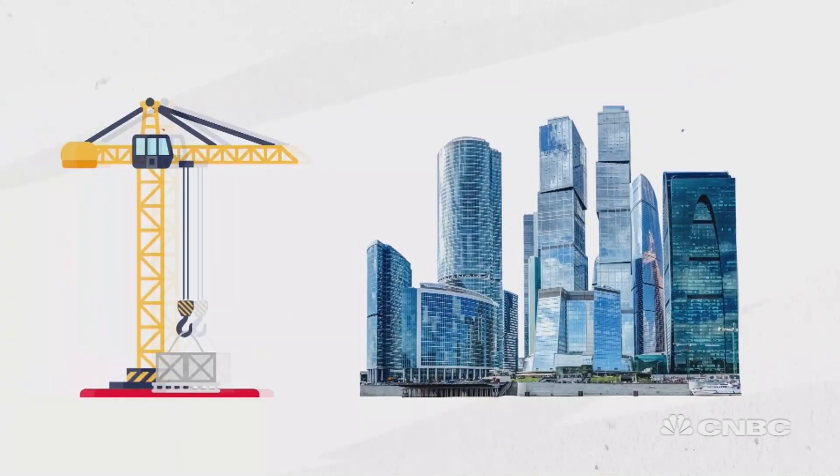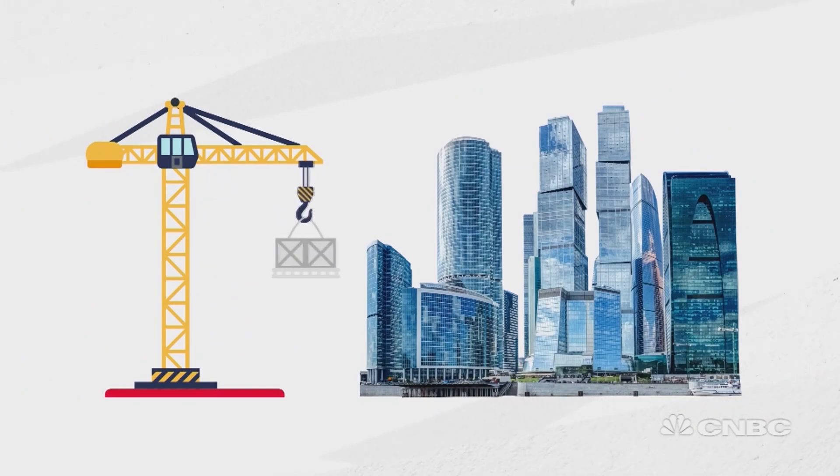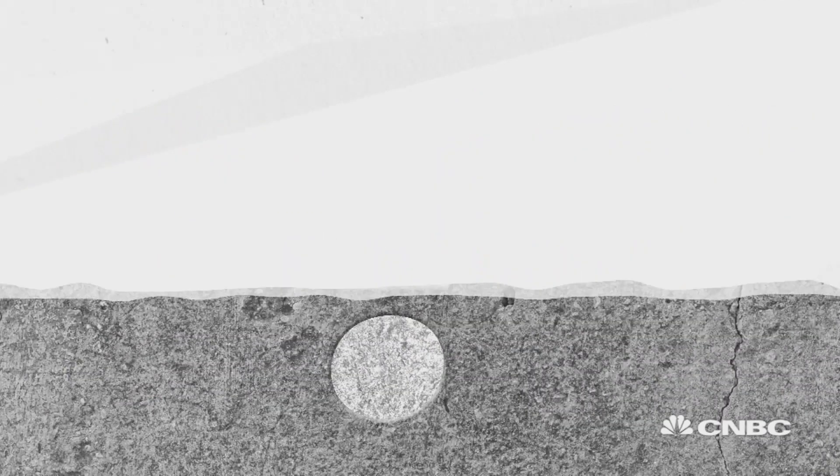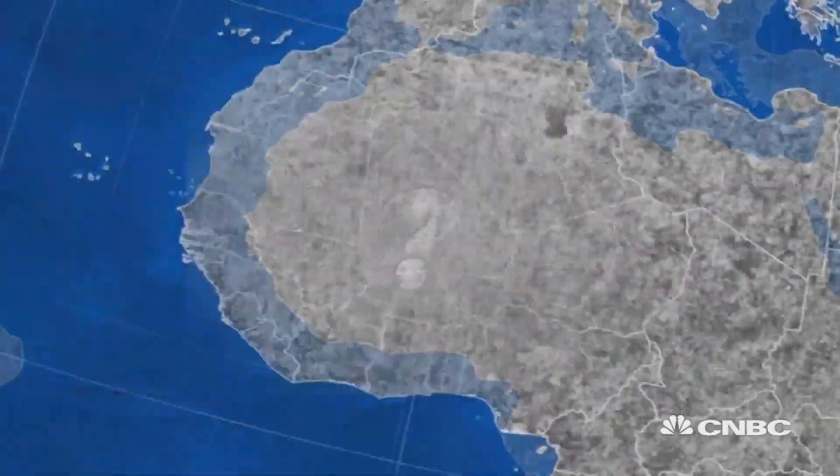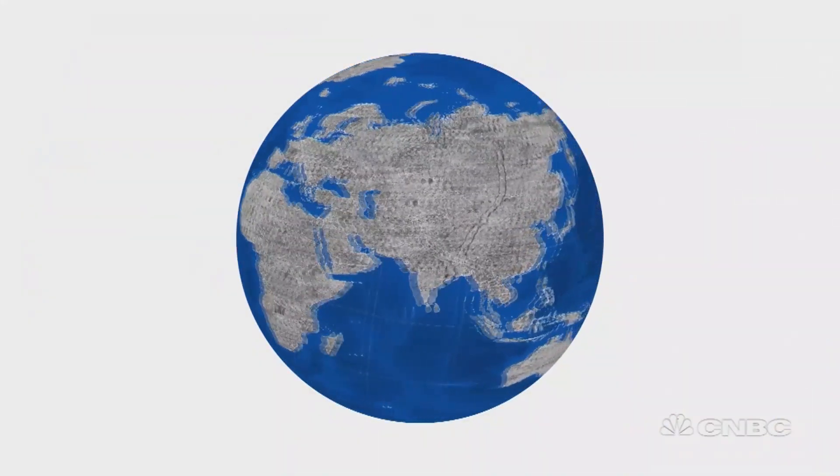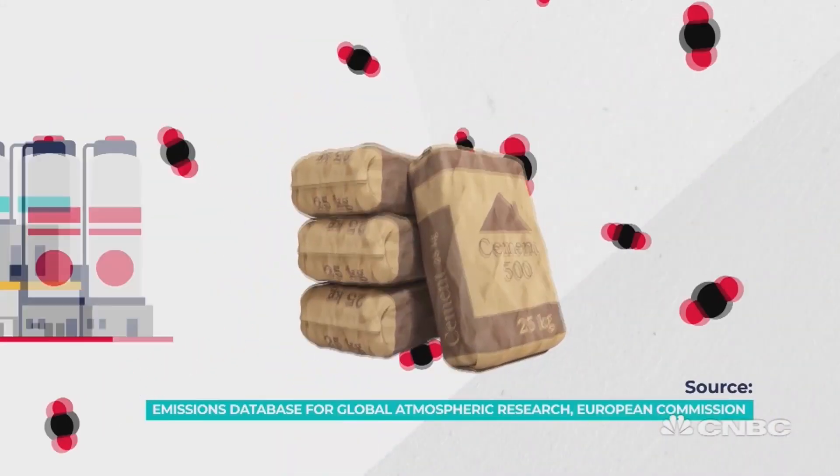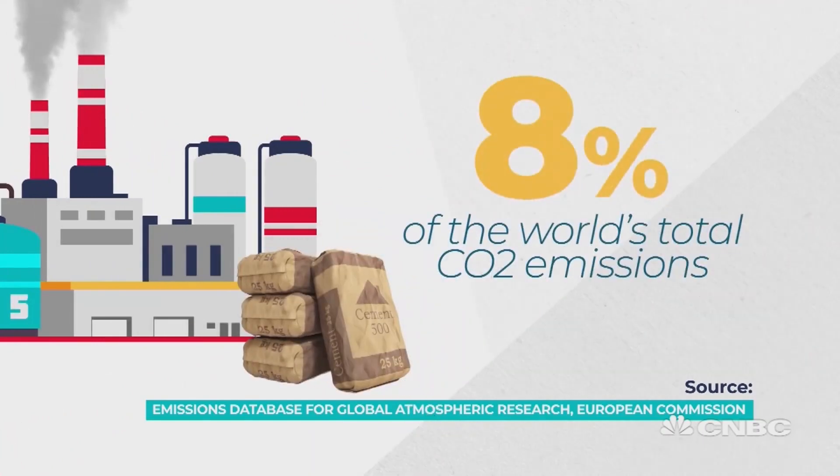And the process to build them in the first place is traditionally energy intensive. Did you know that concrete is the most commonly used human-made material on Earth? Producing cement, its main ingredient, causes around 8% of the world's total CO2 emissions.